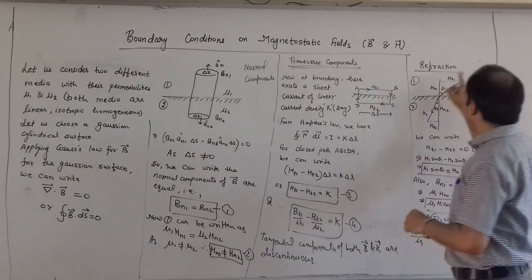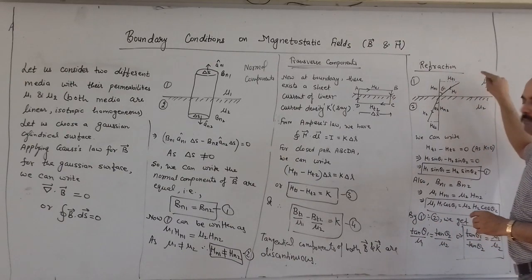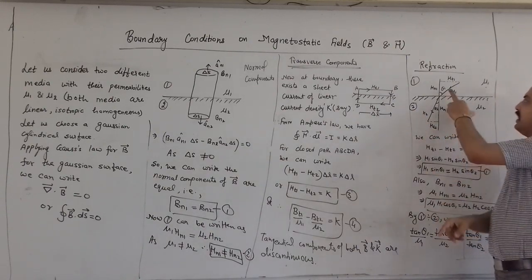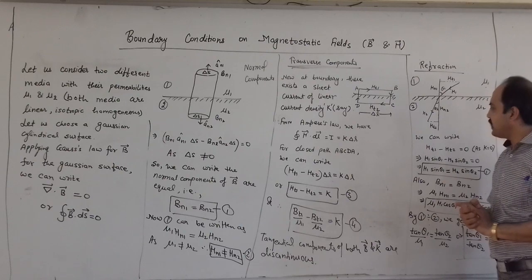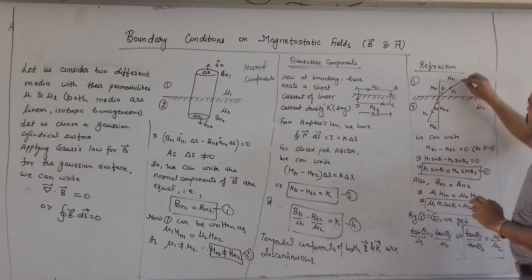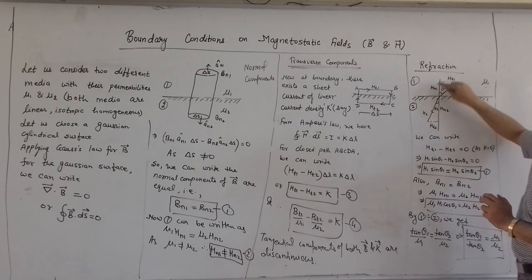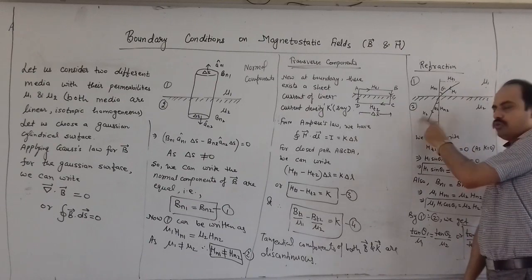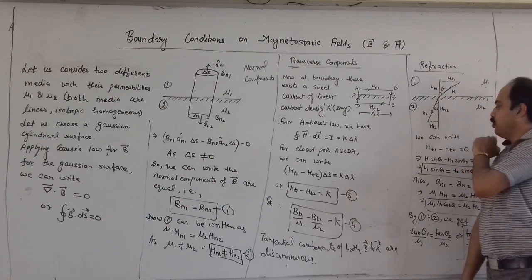Now we will take one example for refraction. Let us consider a ray incident from medium 1 and refracted into medium 2. Theta 1 is the angle of incidence and theta 2 is the angle of refraction. We can identify the tangential component of H1, the normal component of H1, the tangential component of H2, and the normal component of H2 from the figure.